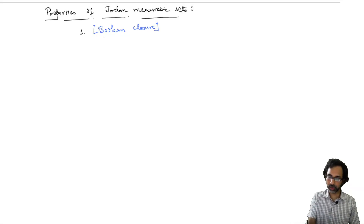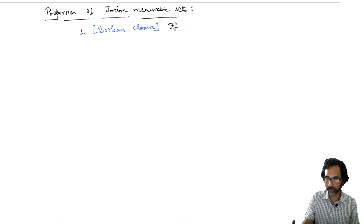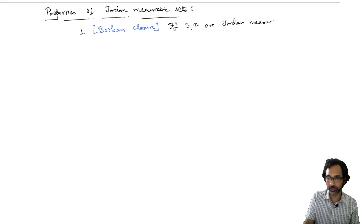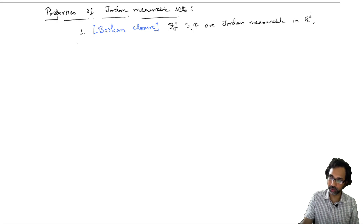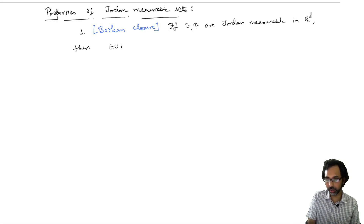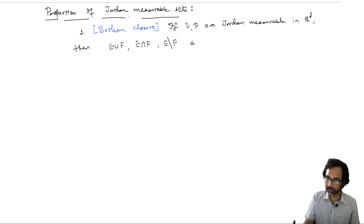The first of these properties is called Boolean closure, and this says that if E and F are Jordan measurable subsets of R^d, then the union E∪F, the intersection, the set difference, as well as the symmetric difference are all Jordan measurable.